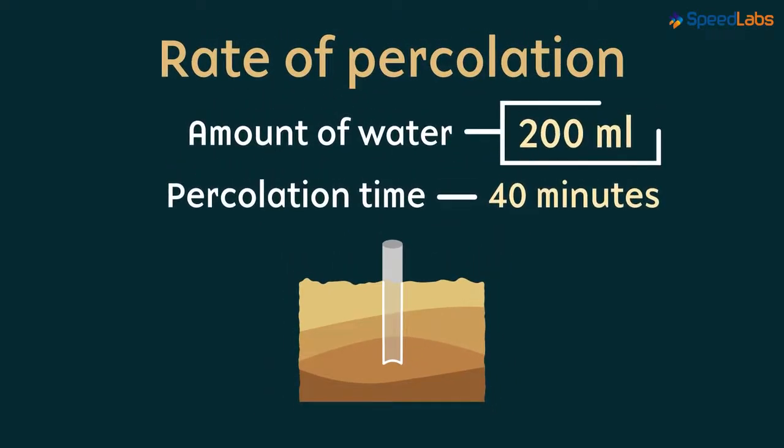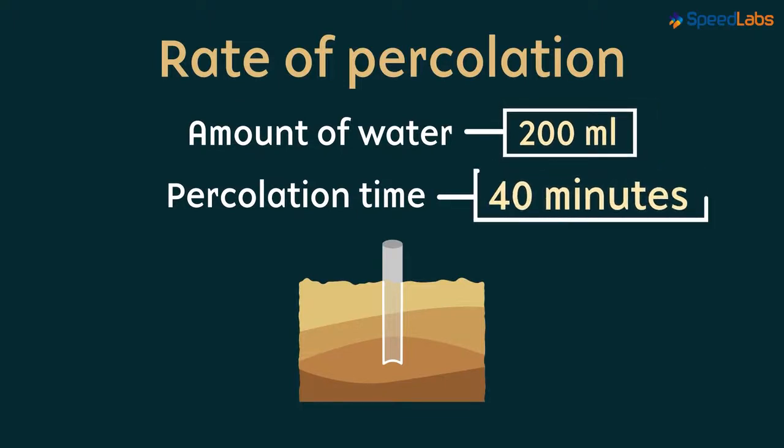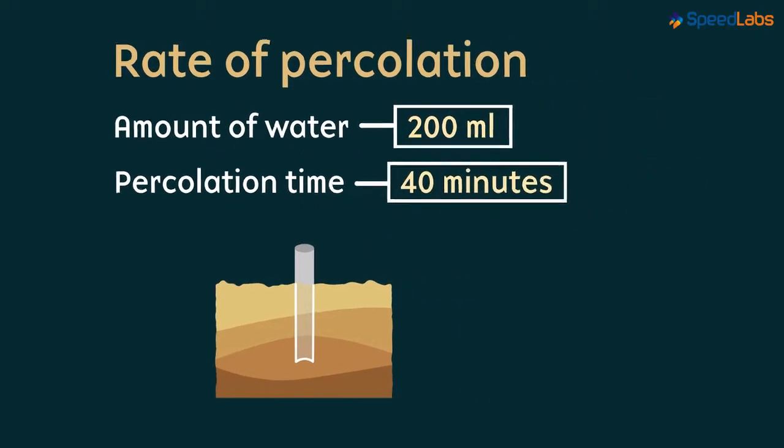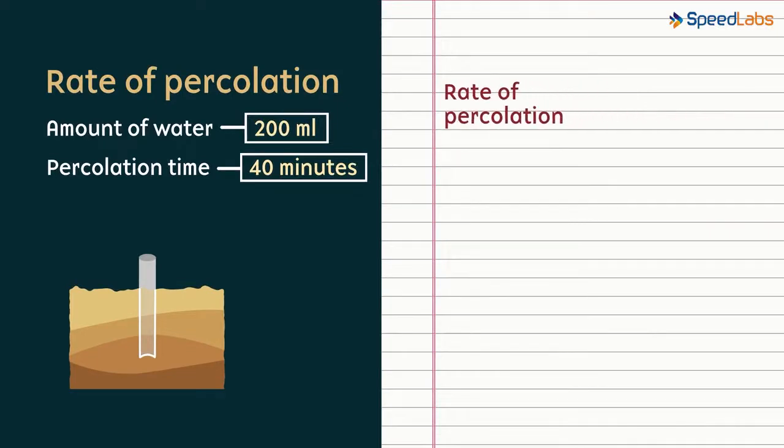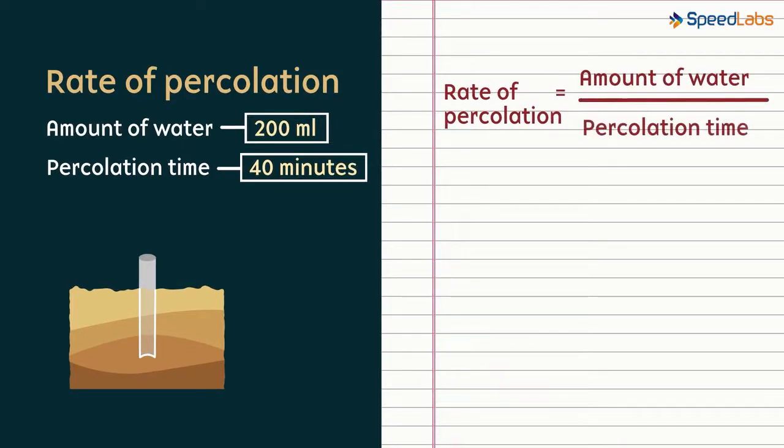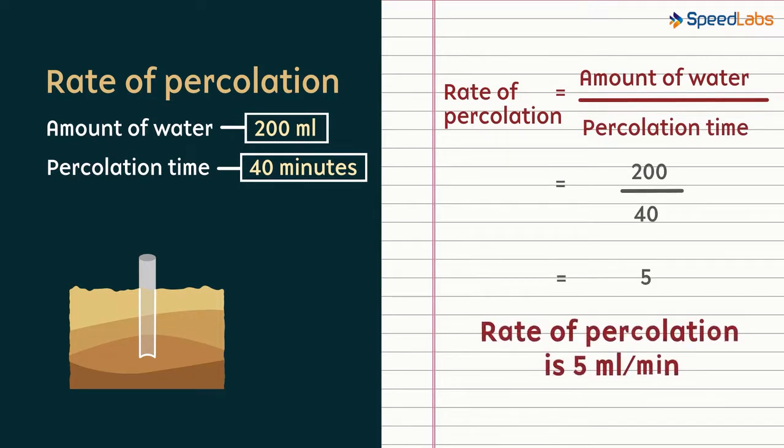So now if 200 milliliters of water has taken 40 minutes to percolate, then the rate of percolation can be calculated as the amount of water added divided by the time taken by percolation. This gives us 200 over 40 which is 5. So the rate of percolation is 5 milliliters per minute.